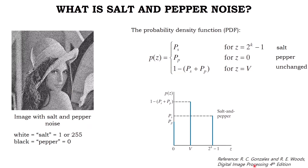So the salt and pepper noise is just a random number of ones and zeros that appear in the image. Based on digital image processing textbooks, this is the probability density function of salt and pepper noise. Here z is the pixel value, k is the bit depth of the image, and v is the original image pixel value.